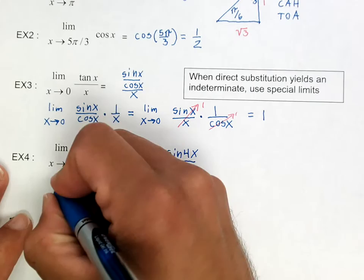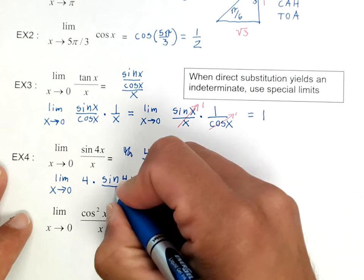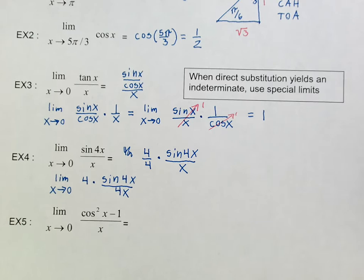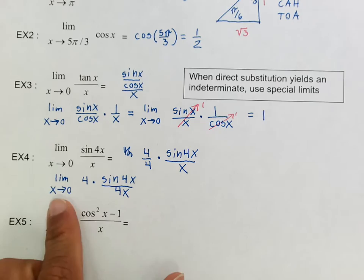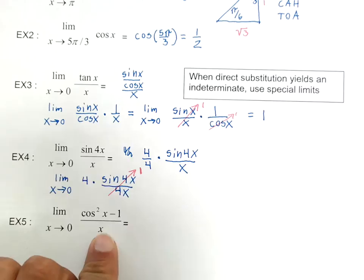And then now I'm going to rearrange this where I have the limit as x goes to 0 of 4 times sine of 4x over 4x. And then in that moment you might be thinking, why does that even matter? Well it turns out that the limit as x goes to 0 of sine of 4x over 4x is the same thing as the sine of x over x, which is 1. So all of this becomes 1.